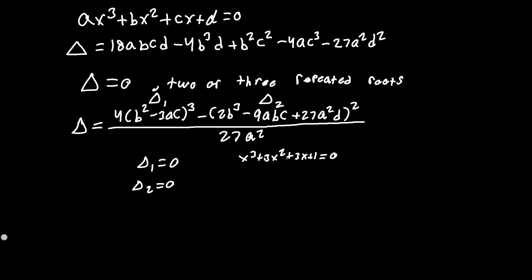Plugging in a = 1, b = 3, c = 3, d = 1, we compute Δ₁ = b² - 3ac = 9 - 9 = 0. By that property, Δ₂ should also be 0.